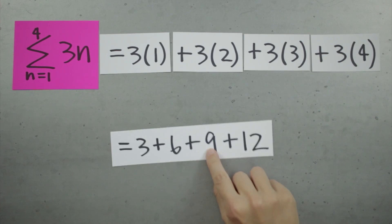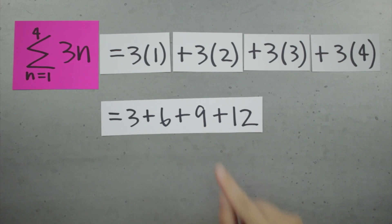Then we simplify this, and you can see that we get back to the partial sum of the first four terms that we started with.